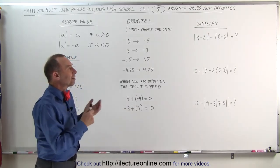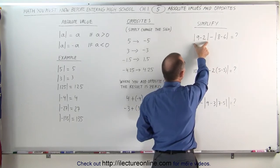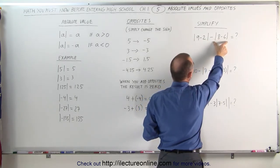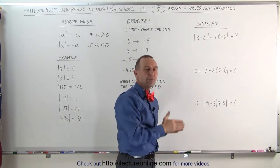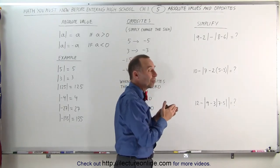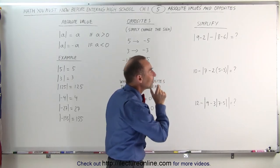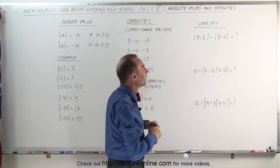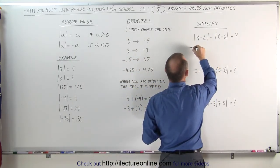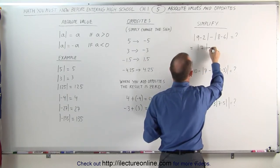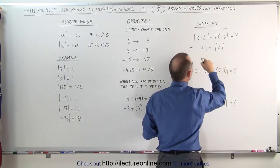The difficult part may come in when you're trying to simplify expressions that have absolute value symbols in them. For example, the absolute value of 9 minus 2, subtract from that the absolute value of 8 minus 6. The way you simplify that is using the same order of operations — absolute value symbols act like parentheses. So you do what's inside the absolute value symbols first. That means here you have 9 minus 2, that becomes 7. So this equals the absolute value of 7, minus the absolute value of 8 minus 6, which is 2.